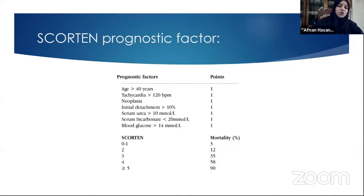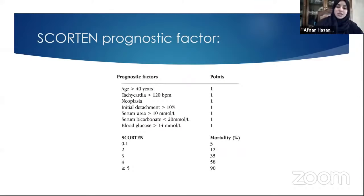The SCORTEN prognostic system has seven points — each increases predicted mortality. Parameters include: age over 40, tachycardia over 120, malignancy, detachment of more than 10% of body surface area, serum urea over 10, bicarbonate less than 20, and blood glucose over 14.